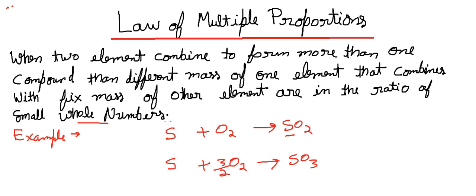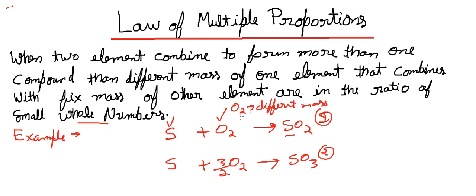The two elements are sulfur and oxygen, which combine with each other to form more than one compound — SO₂ and SO₃. Then the different masses of one element, oxygen, which combine with different amounts, are compared against the fixed mass of the other element, sulfur, and should be in a ratio of simple whole numbers.